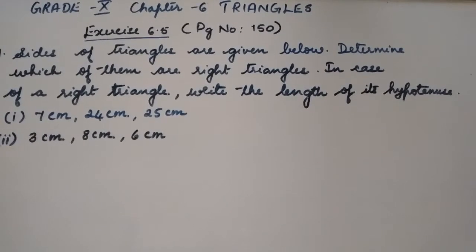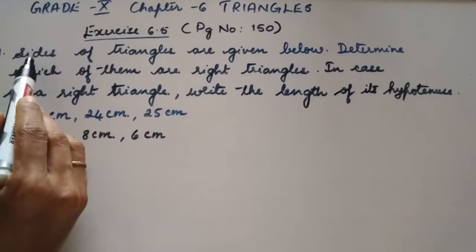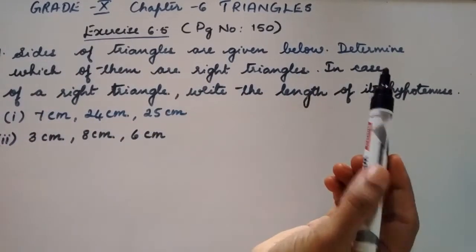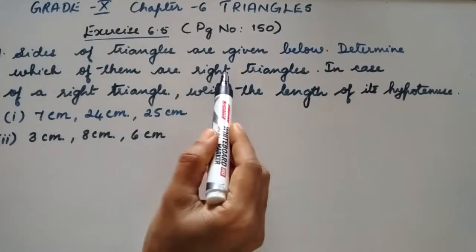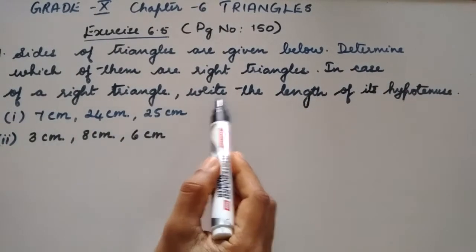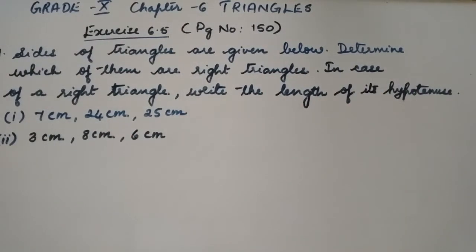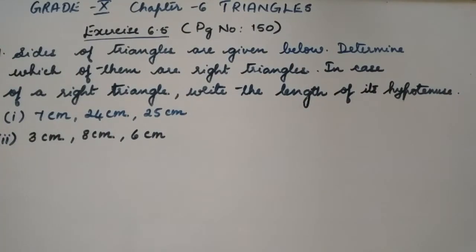Grade 10, Chapter 6: Triangles. Let us solve Exercise 6.5, page number 150 of your mathematics textbook. Problem number 1: Sides of triangles are given below. Determine which of them are right triangles. In case of a right triangle, write the length of its hypotenuse. How will we know that they are right triangles?